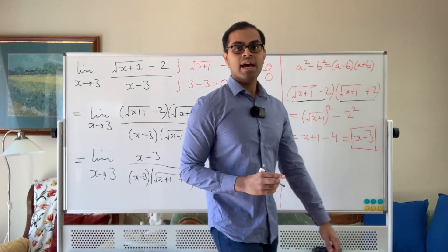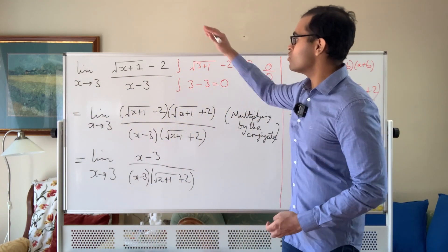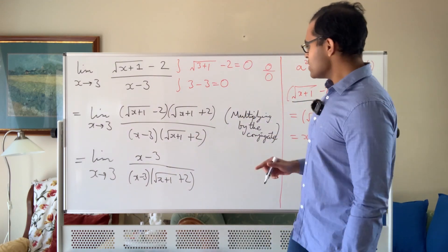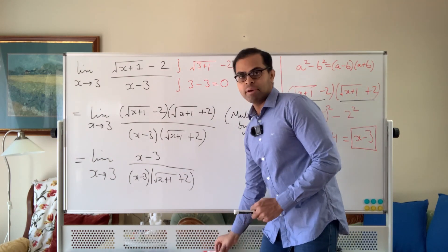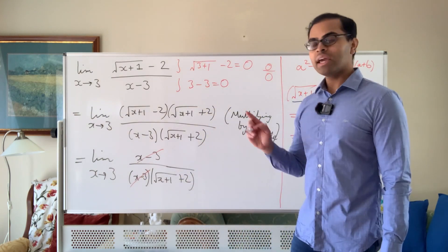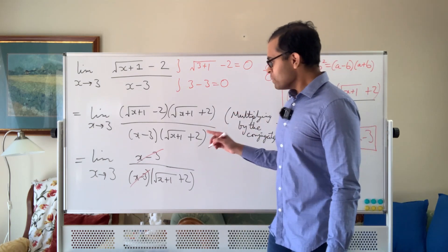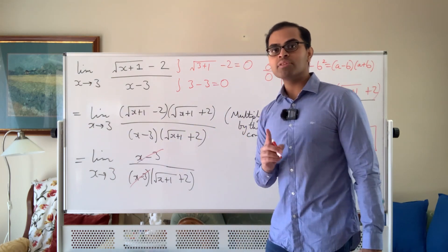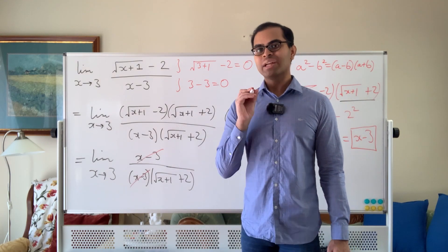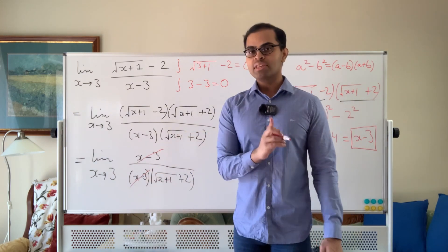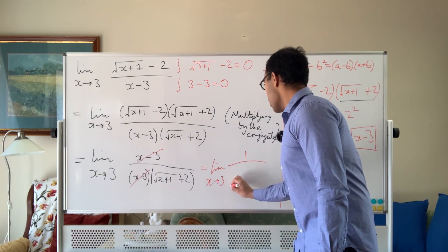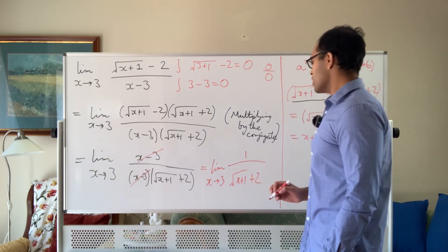Now you see what's happening — it's the same idea as before. When you have a quadratic on top and x minus 3 on bottom in a 0 over 0 situation, you cancel an x minus 3. Now, by multiplying top and bottom by the conjugate of the radical expression, we can cancel off the x minus 3. Near 3, x minus 3 is non-zero — maybe very small, but non-zero — so we can cancel it off for that reason.